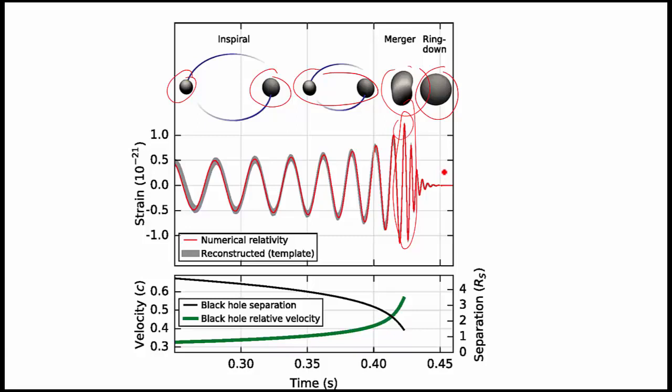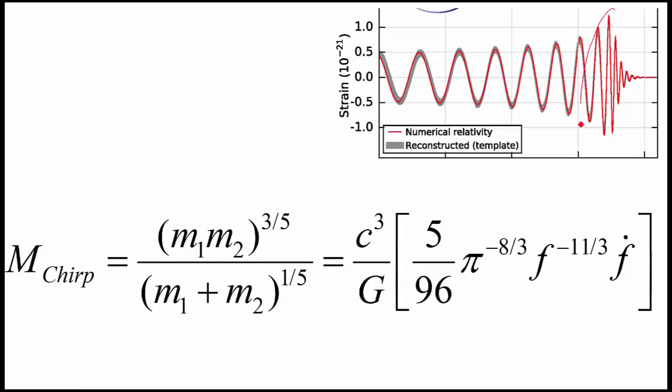What can we deduce from this? Well the simplest deduction comes from the early stages. When you're in the late stages you need a full supercomputer numerical relativity simulation. But in the early stages as an approximation, the chirp mass. Now this is the equation for the chirp mass.